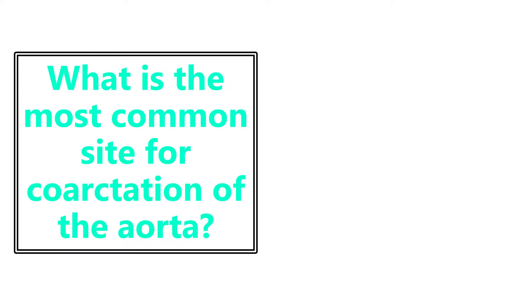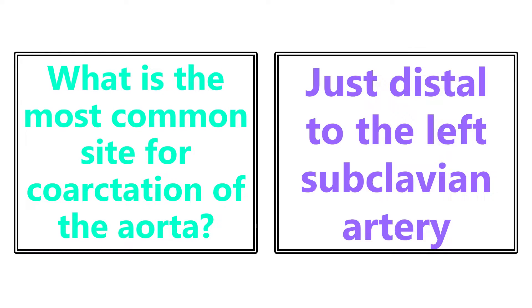What is the most common site for coarctation of the aorta? This is going to be just distal to the left subclavian artery. It can occur even further down, but the most common site is just distal to the left subclavian artery coming off the aorta.